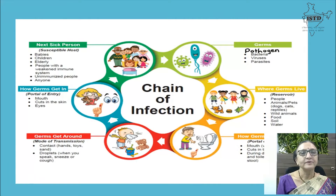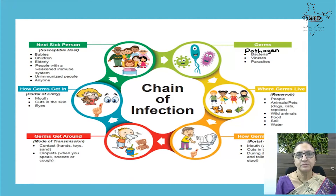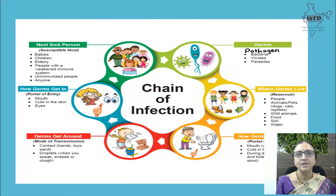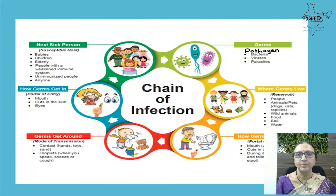The chain of infection begins with germs — pathogens — which can be bacteria, viruses, or parasites. These germs live somewhere called the reservoir, which can be people, animals, pets, wild animals, food, soil, and water.